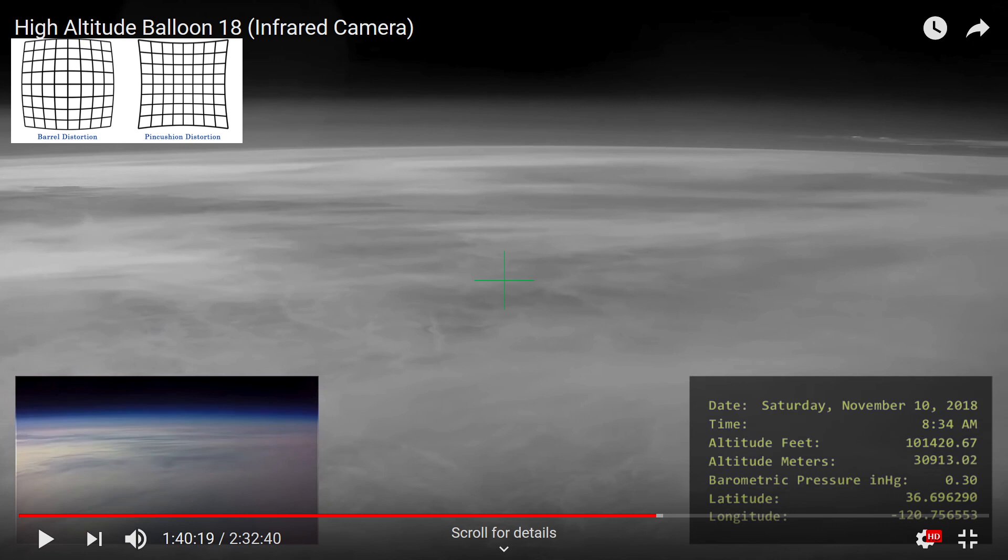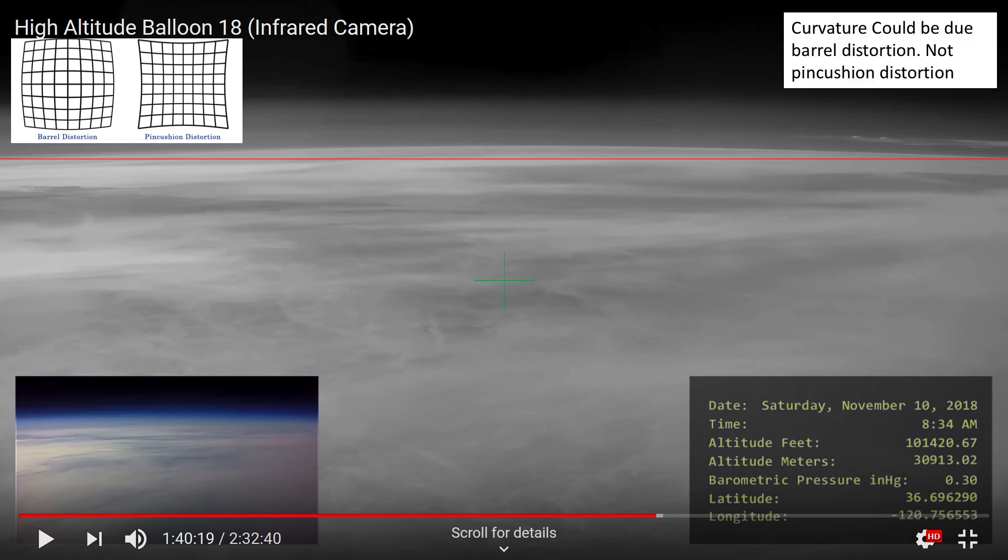Now, here we have another image with the horizon well above the center, and we still see curvature. Now, this time, we could say that this curvature is either due to actual curvature in the Earth's surface or due to barrel distortion, not due to pin cushion distortion like the previous stills.